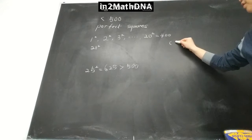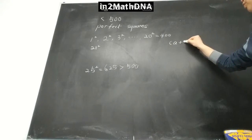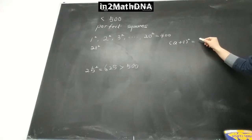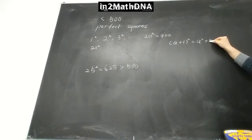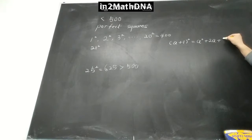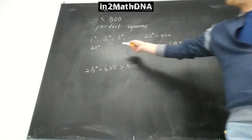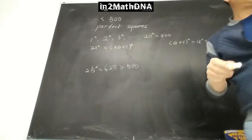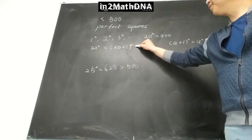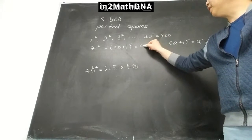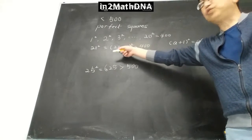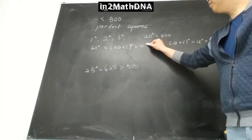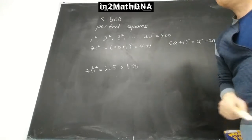You can use the identity: (a+1)² = a² + 2a + 1. So 21 squared is (20+1)², which equals 20 squared plus 2 times 20 plus 1. That gives 400 plus 40 plus 1, which is 441.